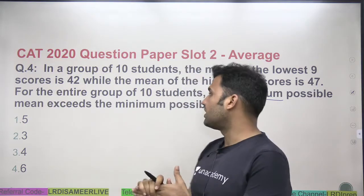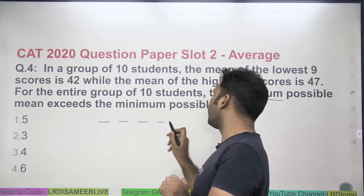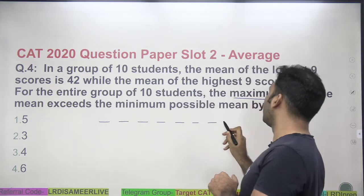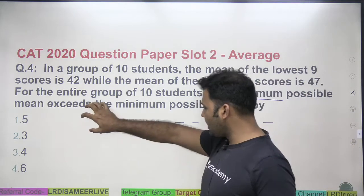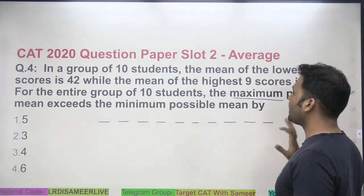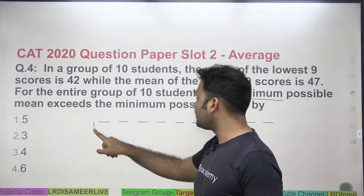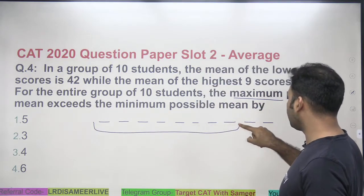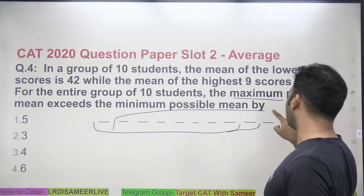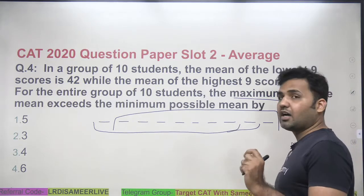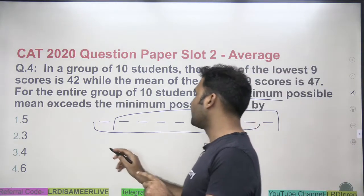We are talking about 10 students. Let's arrange all the values 1 through 10 in ascending order. We do not know the values, but let's write down all 10 in ascending order. When talking about the lowest 9, we mean these 9 values; when talking about the highest 9, we mean those 9 values.